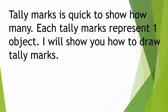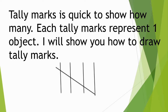I will show you how to draw tally marks. One standing line represents one tally mark. Two standing lines represent two tally marks. Three standing lines represent three tally marks. Four standing lines represent four tally marks. Five lines — with a cross line — make a group. I will show you all of these one by one.